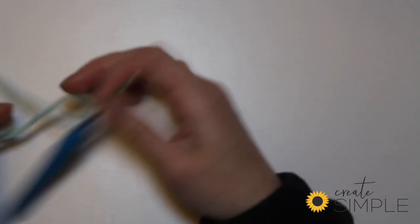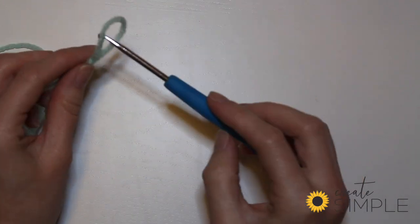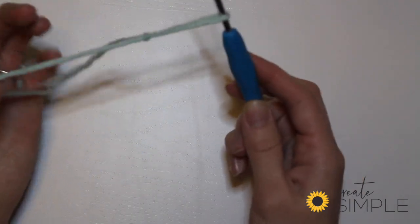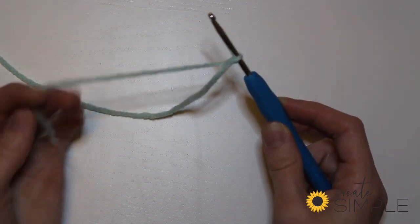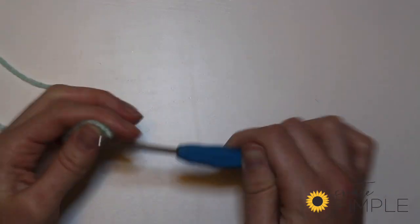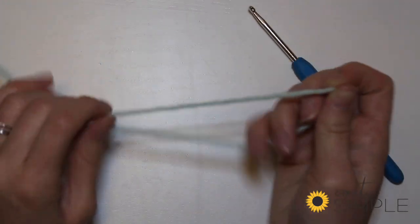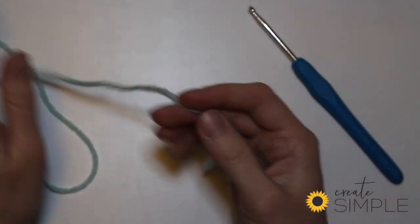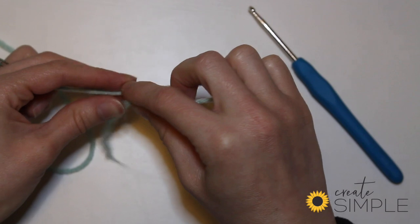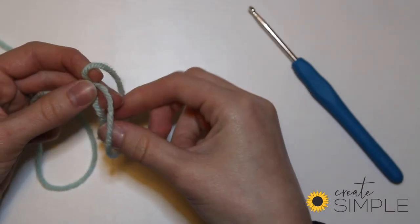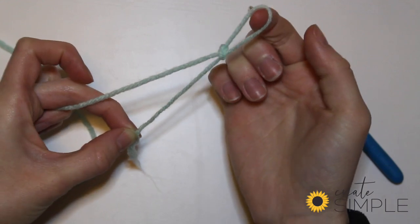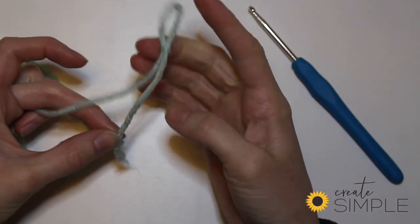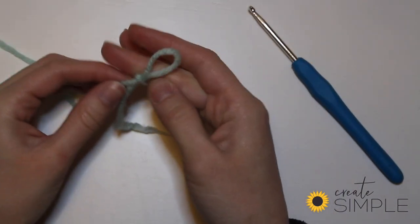You'll take your hook and then this is how you start, and you can pull it tight on your hook. So again, once more to make a slipknot. Make a circle and pull through. That's how to do a slipknot.